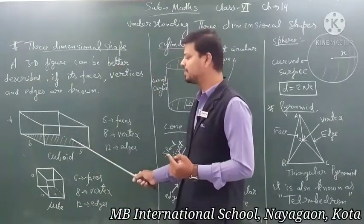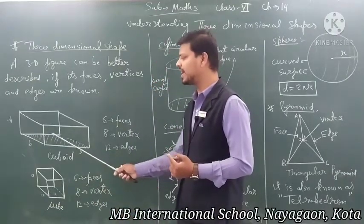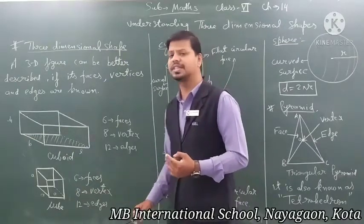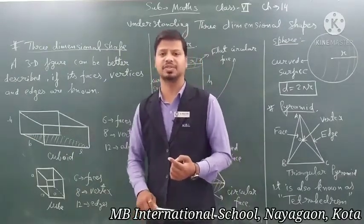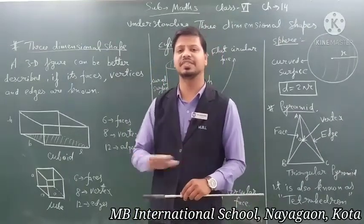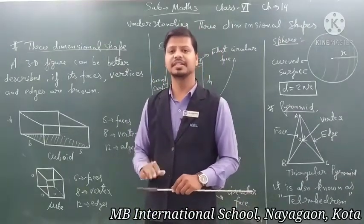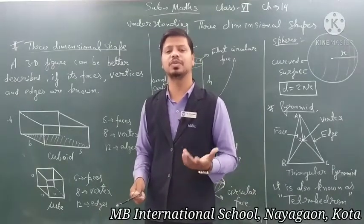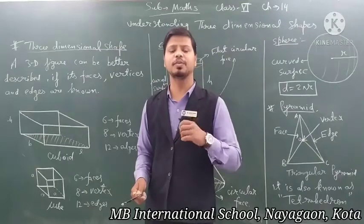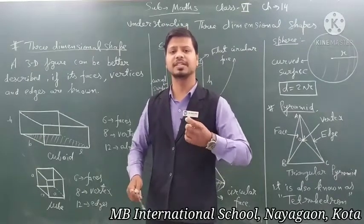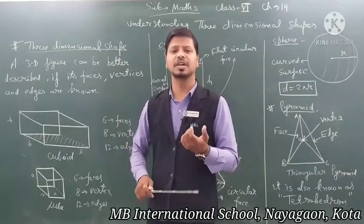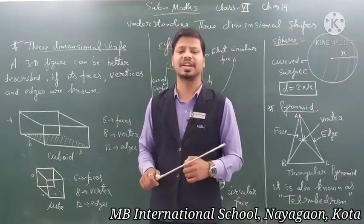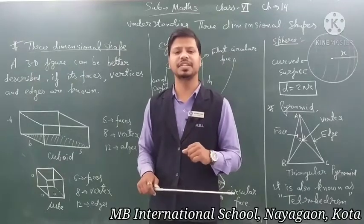A cuboid has all rectangular faces. A face is a flat surface of a 3D figure. To understand faces, take a matchbox as an example of a cuboid. If you look at the matchbox, you can see the total flat surfaces.